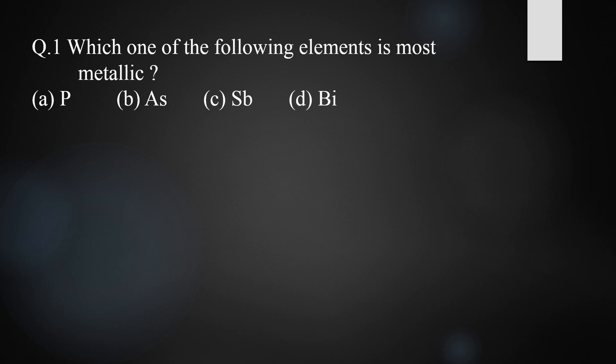As we know, on moving down the group the metallic character increases. Since bismuth is the last element of Group 15, it is at the bottom of the group, so bismuth will have the most metallic character among the elements of Group 15.